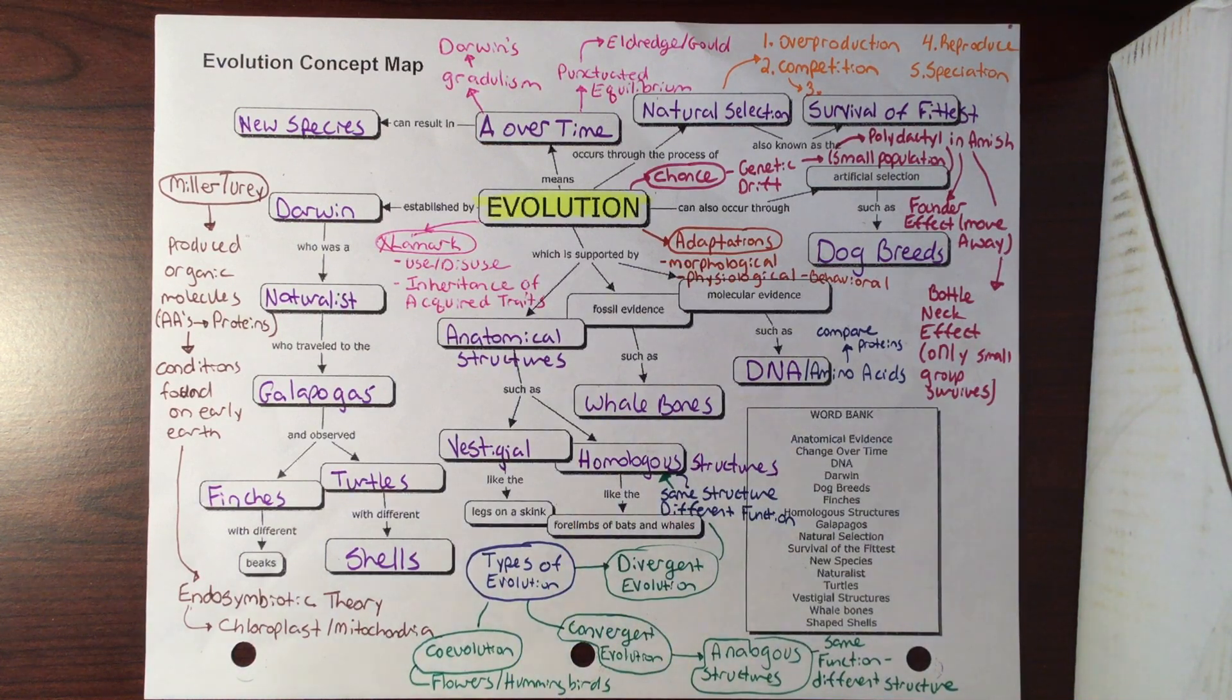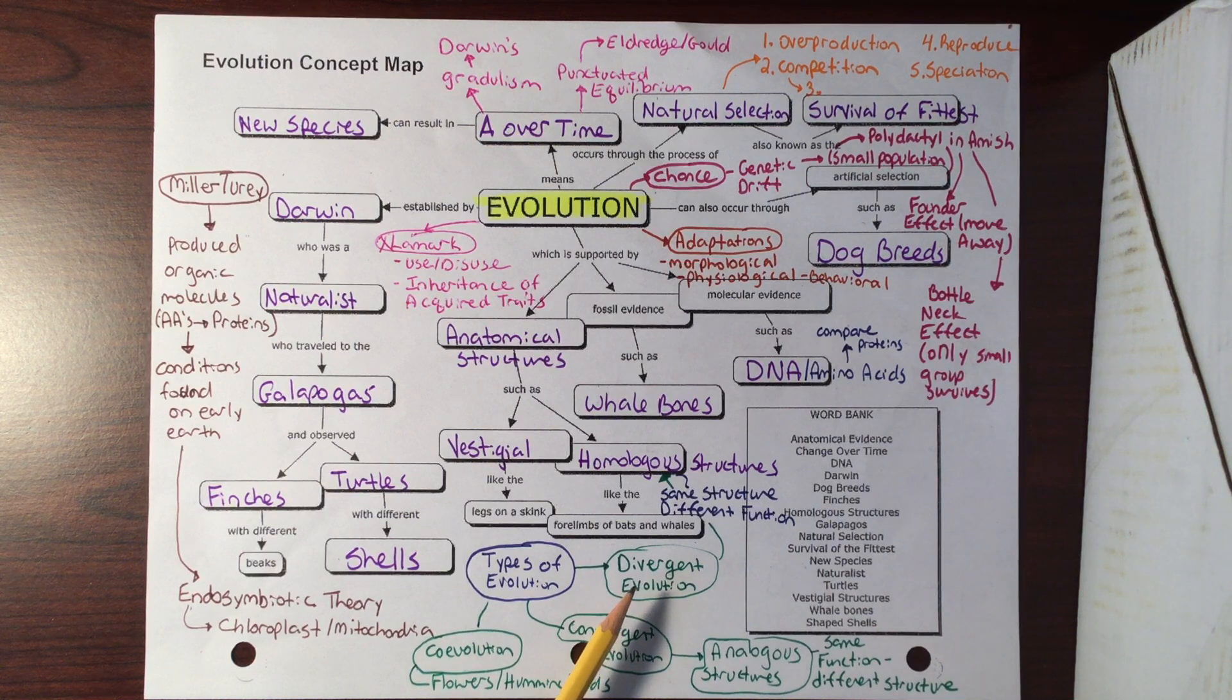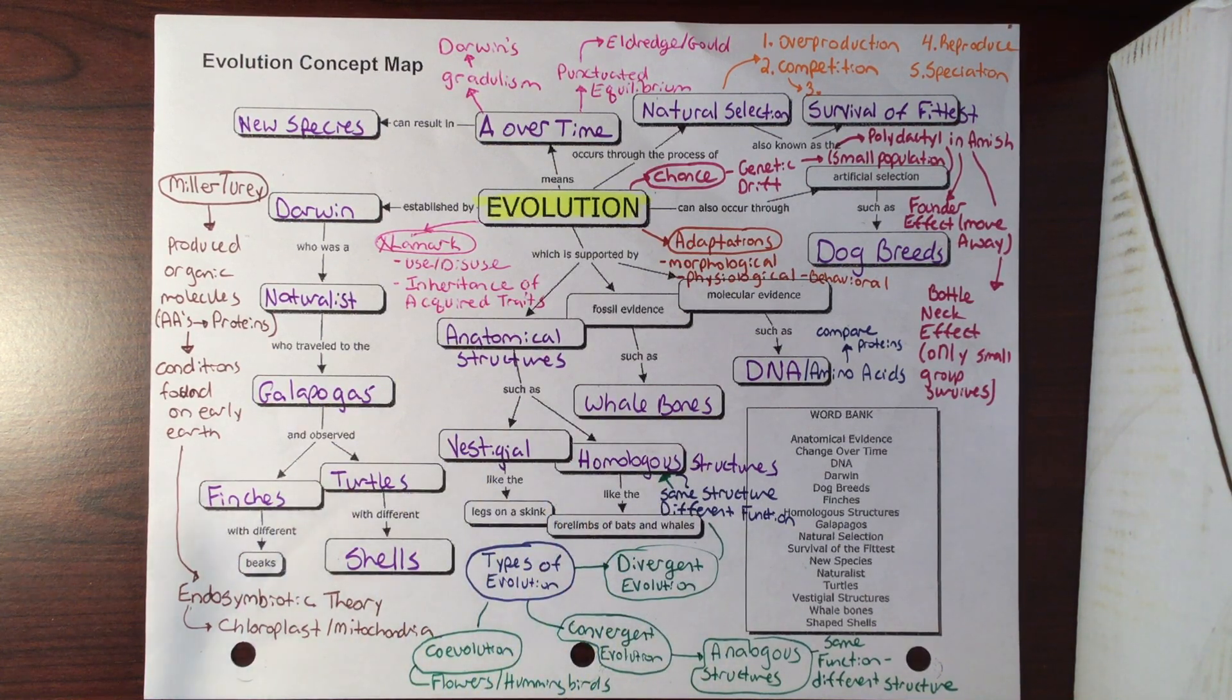We also have analogous structures - same function, different structure. Now we can think of the wing of a butterfly, wing of a bird, wing of a bat. They're all used for the same function, they're all used to fly, but they're slightly different structures. They're all designed a little bit differently there.